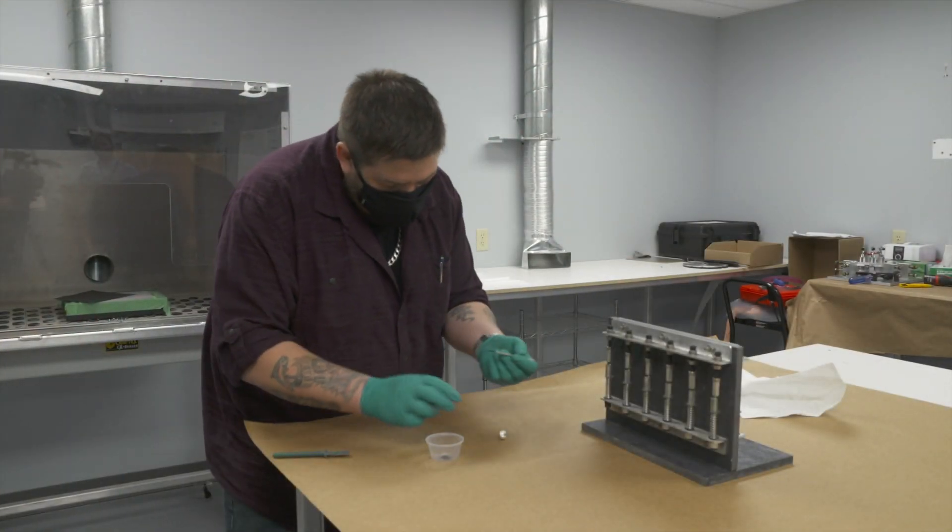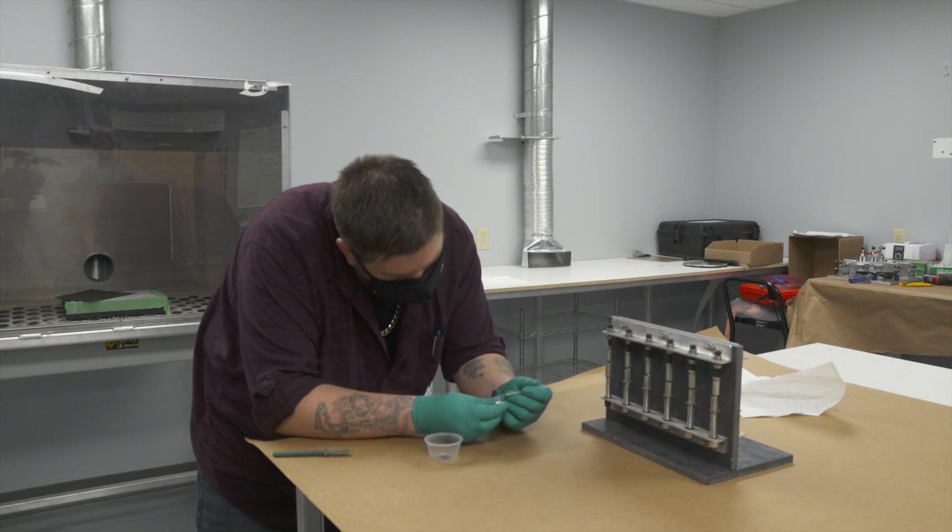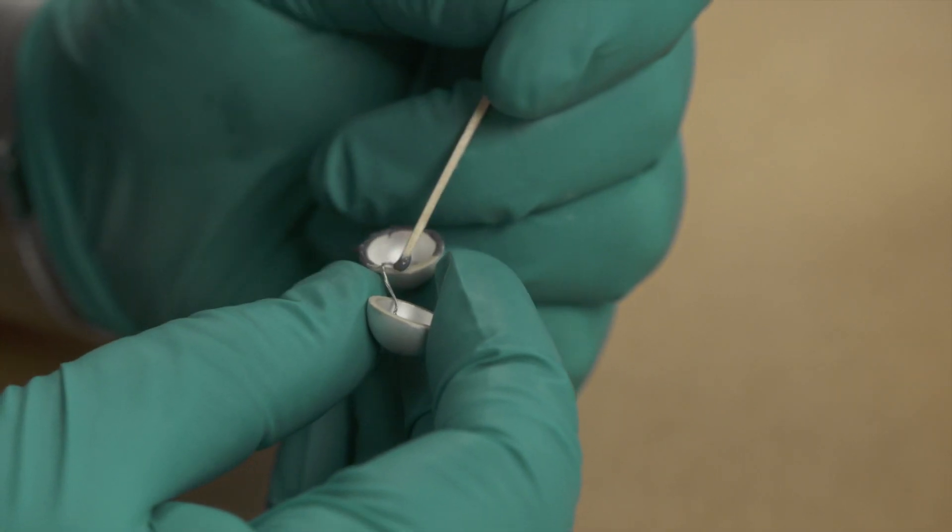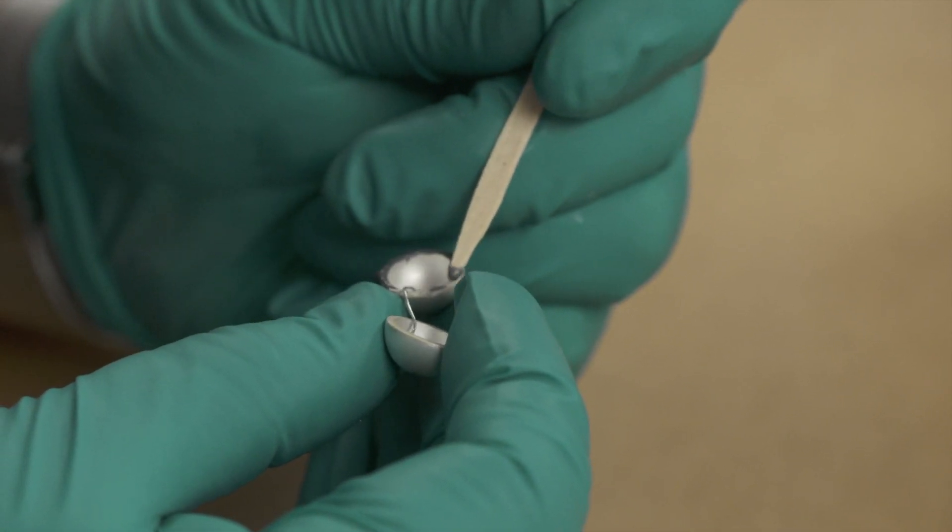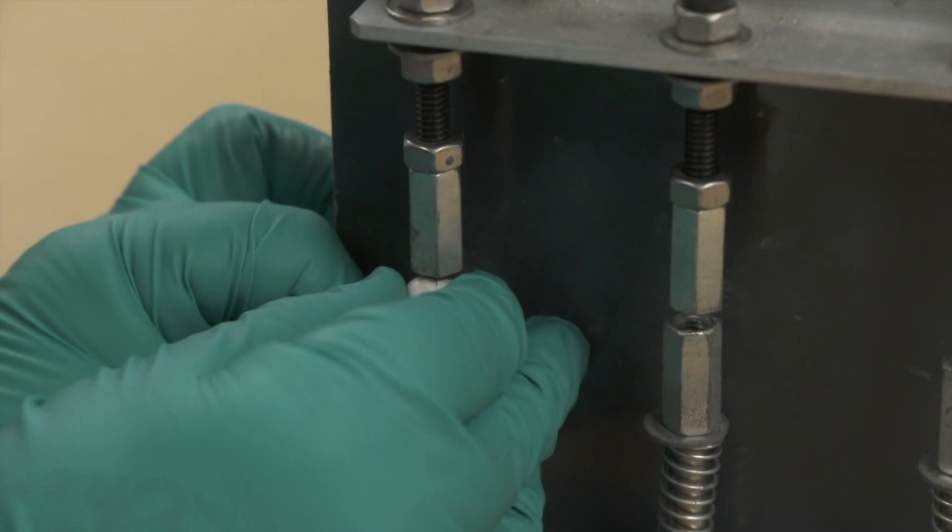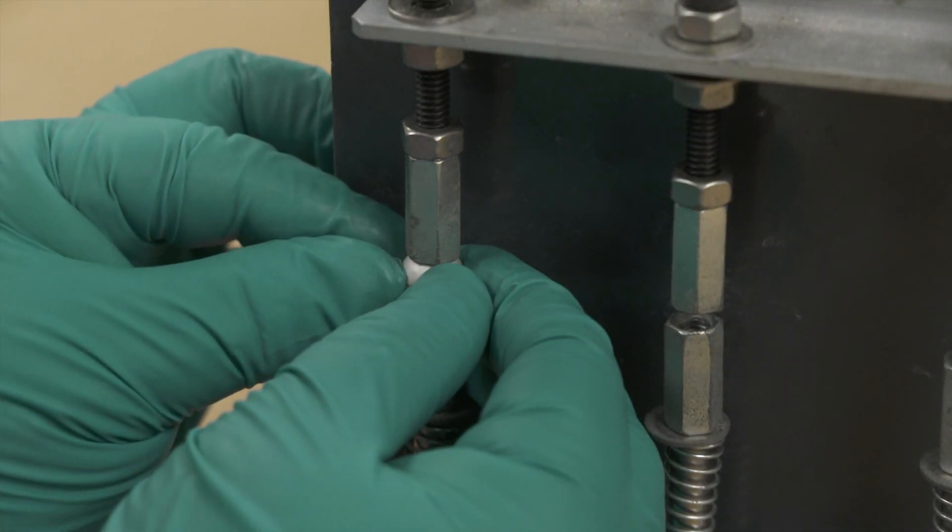Next, epoxy is prepared and then applied to the two hemispheres, carefully bonding them together to create a sphere. A jig aligns the two halves together and they're left to cure for 24 hours.